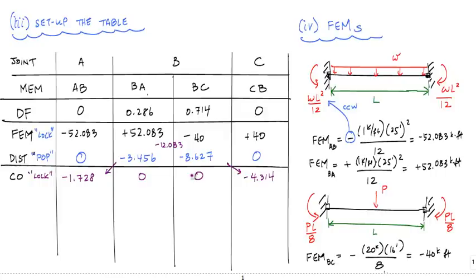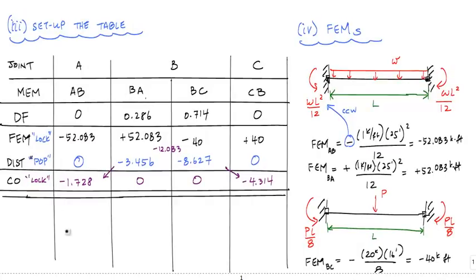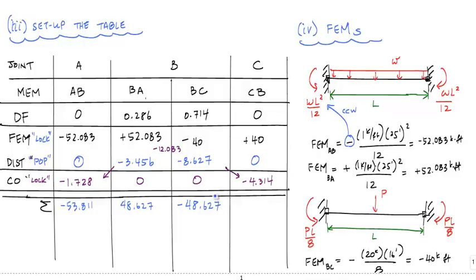Now I sum up all the columns. MAB equals negative 52.083 plus 0 minus 1.728, giving negative 53.811 kip-ft. MBA equals 52.083 minus 3.456, giving positive 48.627 kip-ft. Checking joint equilibrium, MBC should be equal and opposite to MBA, so MBC equals negative 48.627 kip-ft. MCB sums to positive 35.686 kip-ft. These are my four end moments: MAB, MBA, MBC, and MCB.